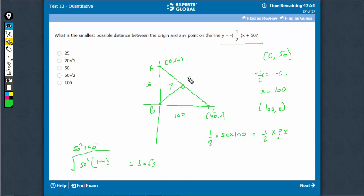So half times P times 50 root 5 should still give me the same value of the area of the triangle. Half and half get cancelled. 50 and 50 get cancelled. P is equal to 100 upon root 5, which is 20 root 5. 20 root 5, B is the right answer.